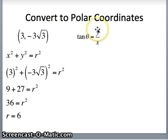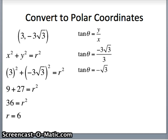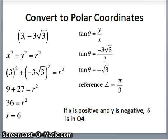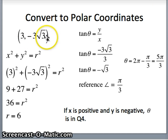The tangent of theta is y over x, opposite over adjacent. So tangent of theta will be the y value divided by the x value: negative 3 root 3 over 3, or negative root 3. But remember, the x value is positive and the y value is negative, and that tells us something about the location of that angle theta. Our reference angle is pi over 3, because the tangent of pi over 3 is root 3. Our quadrant of interest is quadrant 4 — x is positive and y is negative. In quadrant 4 with a reference angle of pi over 3, that gives us 2 pi minus pi over 3, or 5 pi over 3. So r is 6 and theta is 5 pi over 3. We're able to convert from rectangular coordinate form 3 comma negative 3 root 3 to polar form r equals 6 and theta is 5 pi over 3.